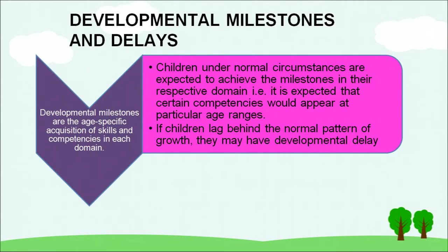What do we understand by delays and milestones? Children under normal circumstances are expected to achieve certain milestones in their respective domains. For example, in sensory motor, we know that more or less by the age of six months the child is able to sit without support; around eight to nine months the child can stand using support; around eleven or twelve months the child takes the first step; and around thirteen to fifteen months most children can walk independently and confidently. These are predictable developmental milestones that every child goes through.